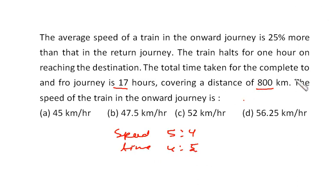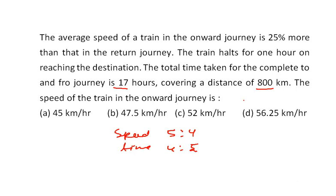The total time taken for the complete to and fro journey is 17 hours, and the train is taking a 1-hour halt at the destination. That means it is actually running for 16 hours and covering a distance of 800 km. So the average speed is 800 by 16, that is 50 km per hour.